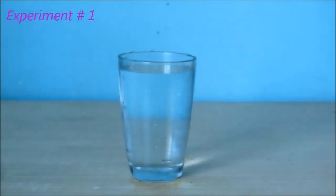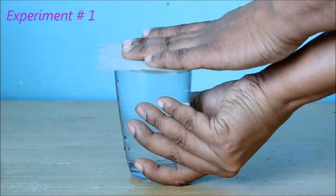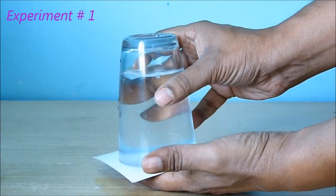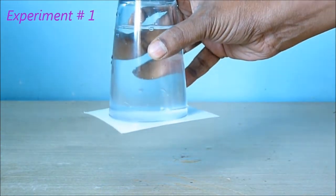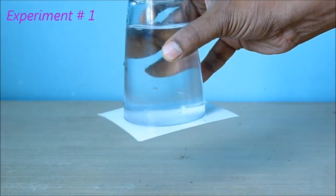Keep a cardboard on top of it, with support of your hands, keep it upside down. Now gradually take your hand out. Wow, see the water is not falling down! The board is holding the water.